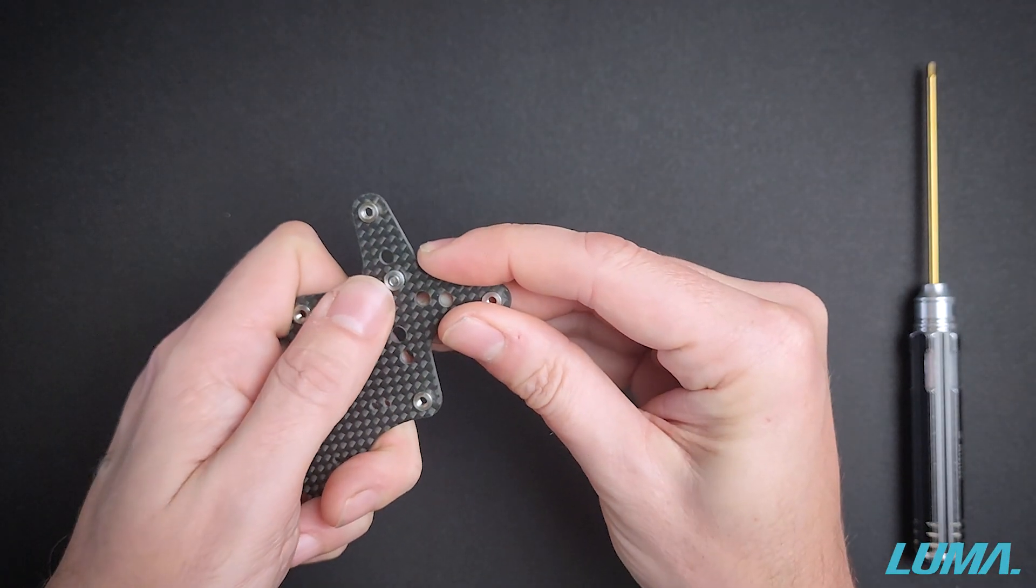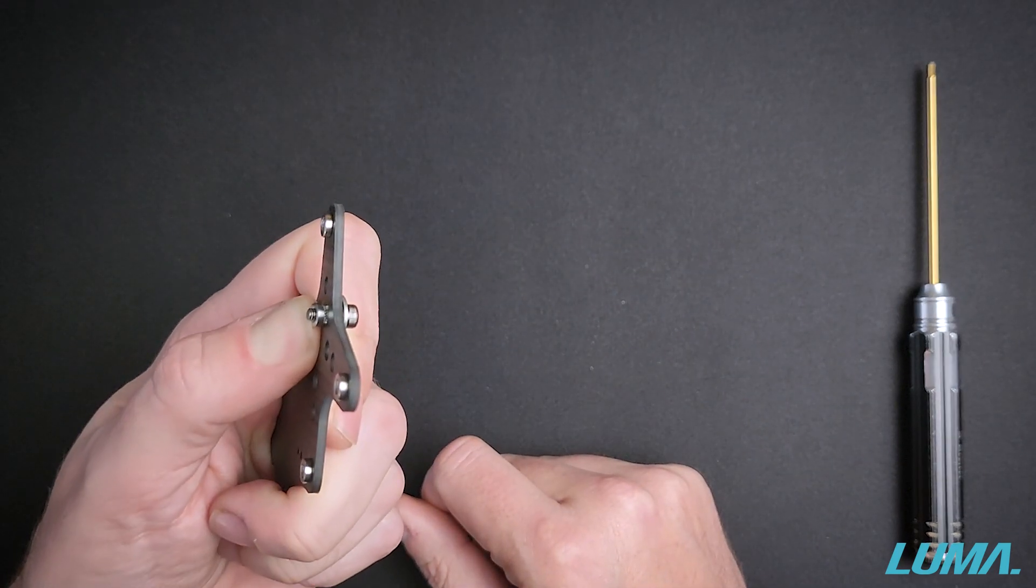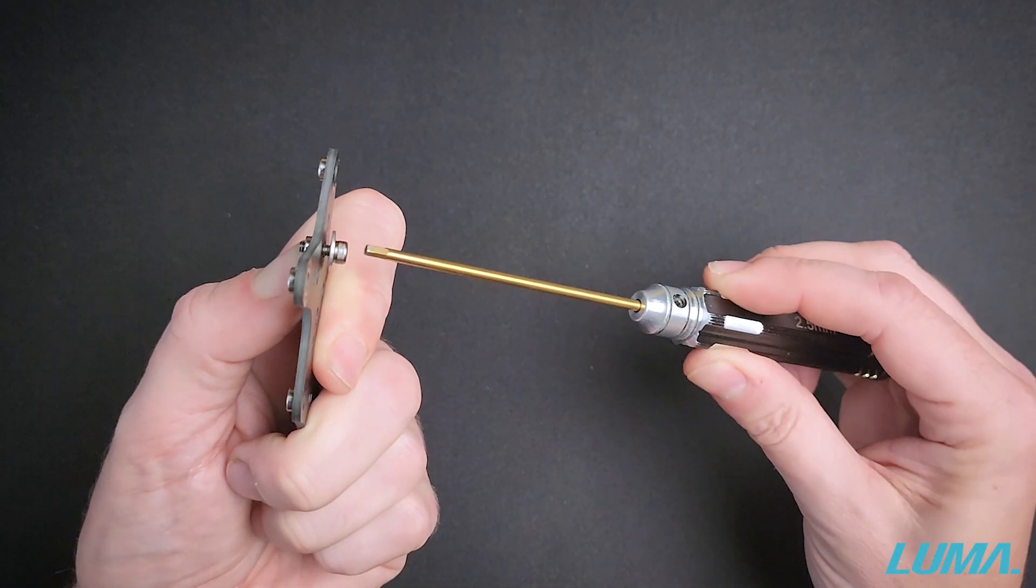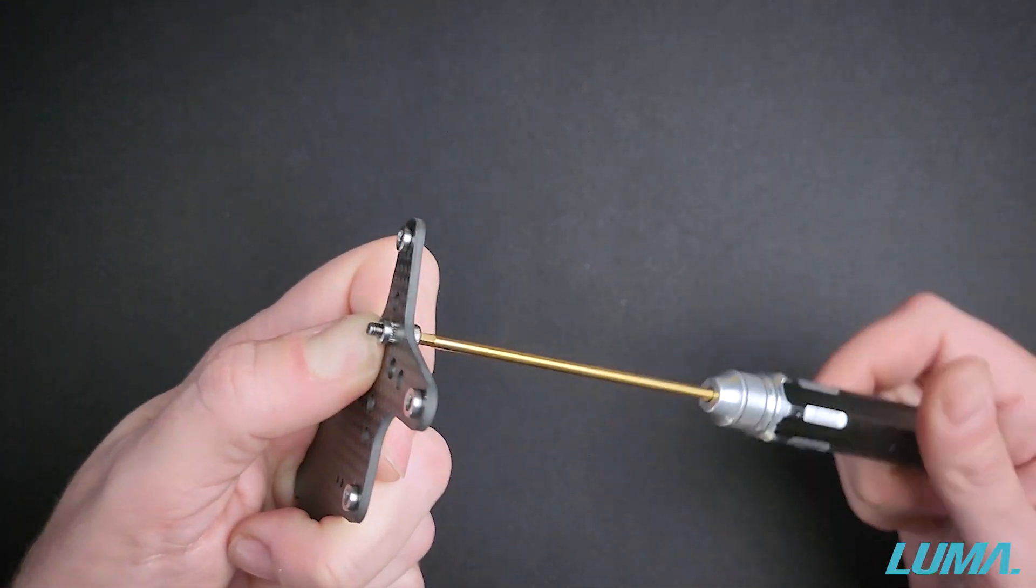What I then do is I flip it back over and I use my nail just to hold the press nut securely where we want it to be. Insert the hex driver in the back here and just begin to twist it.